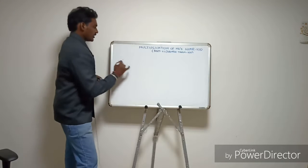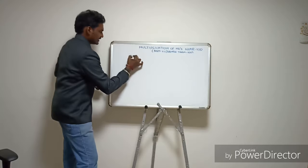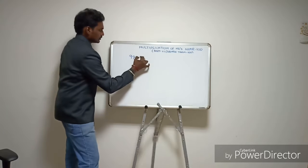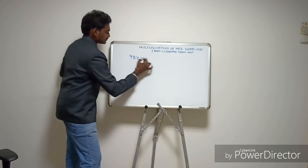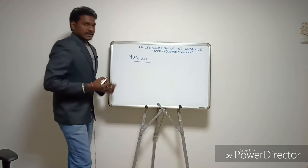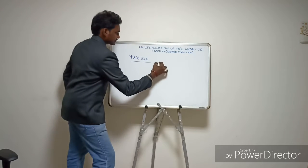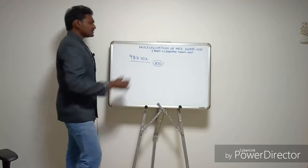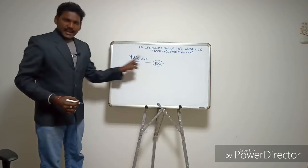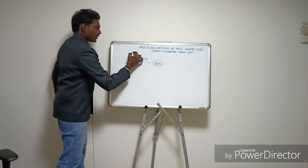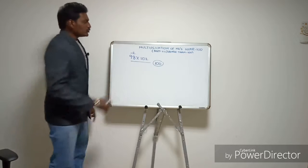Let us see an example. Let us try 98 into 102. Here our base number is 100. 98 is 2 less than 100, and 102 is 2 more than 100.